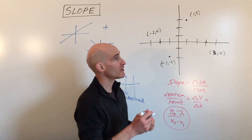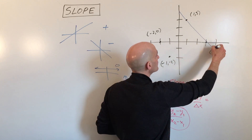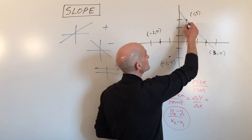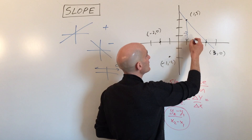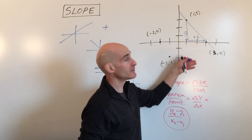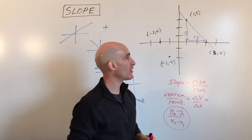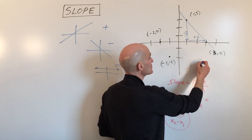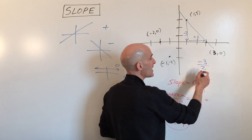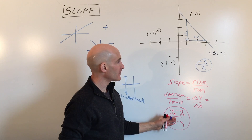One way to find slope is to count the rise and the run. For this line, we go down three — that's negative three — and right two, which is positive two. Remember: down is negative, up is positive, right is positive, left is negative. So the slope here is negative three over two, or negative three-halves.